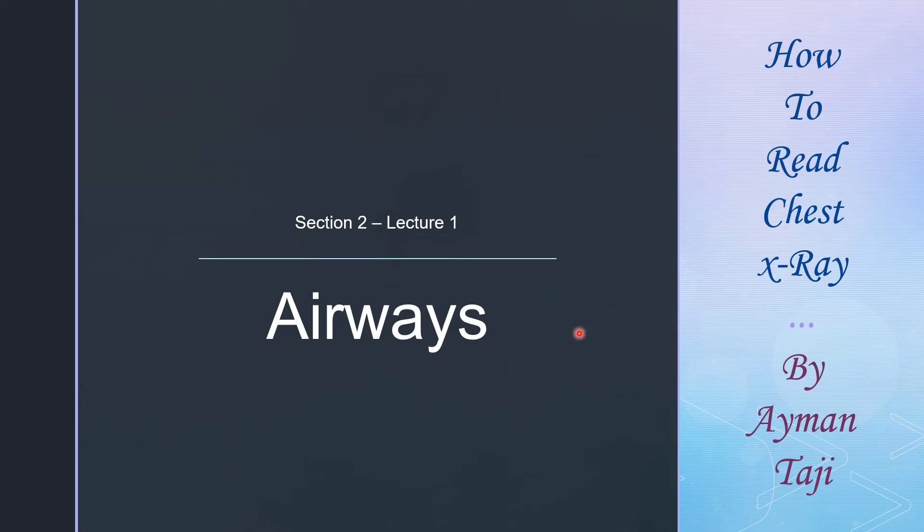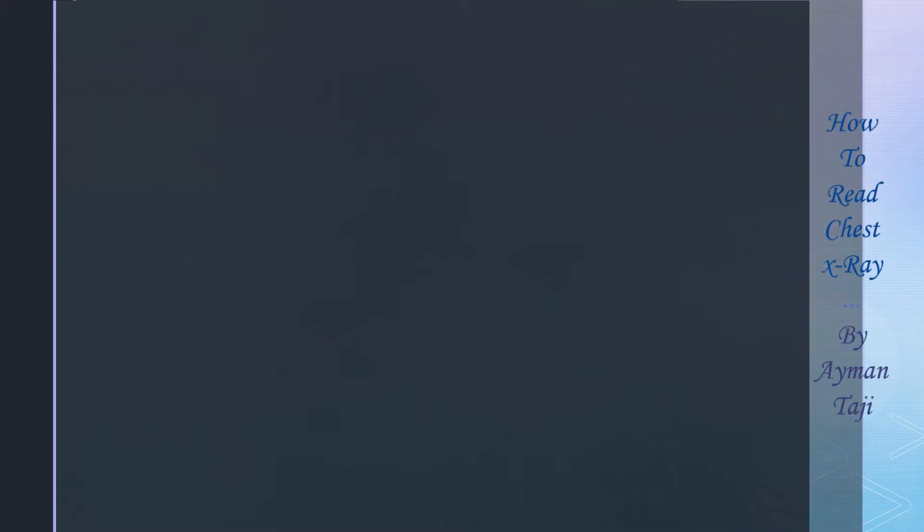Welcome to the second section of this course. From this section we'll be looking for what pathological changes we can find on the X-ray other than the normal anatomy we've been talking about. So let's get started with A for airways.